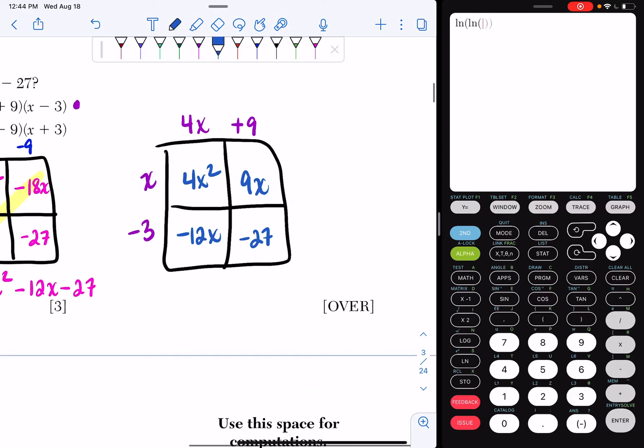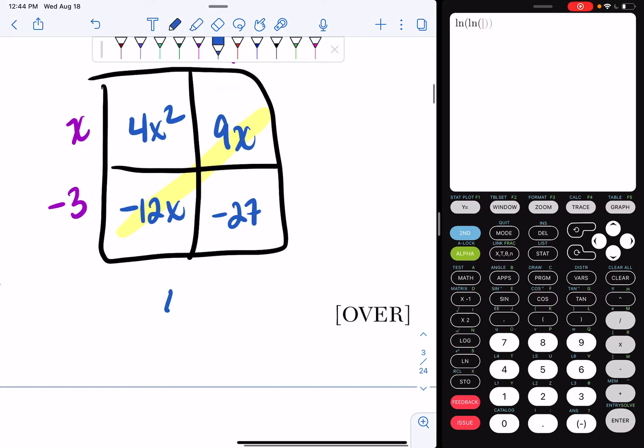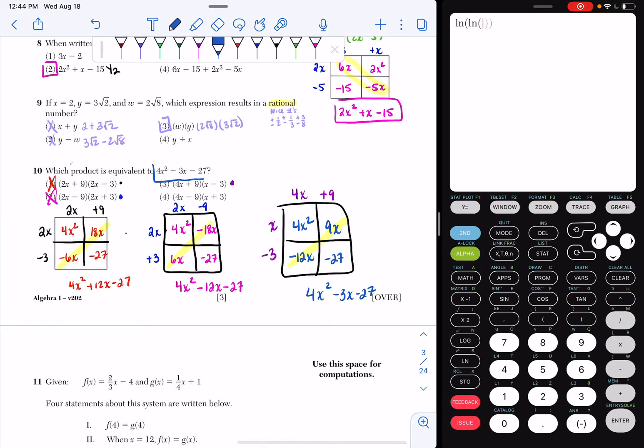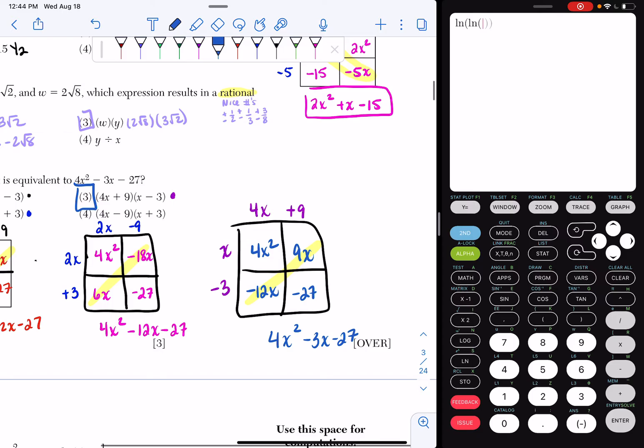I combine the like terms on my diagonal. And I get 4x squared minus 3x minus 27. And if I look, that's exactly what I wanted. So my final answer is going to be choice 3. So this is one way of doing it, where I box method each of my choices.